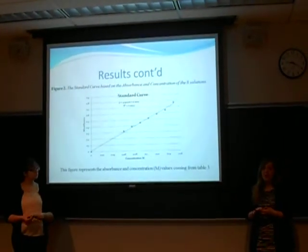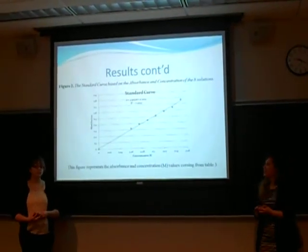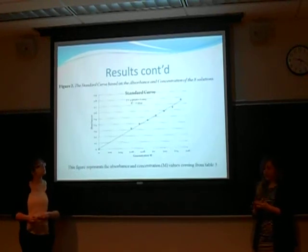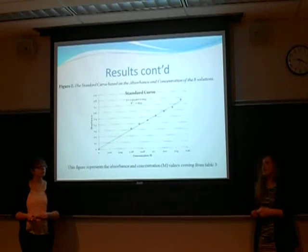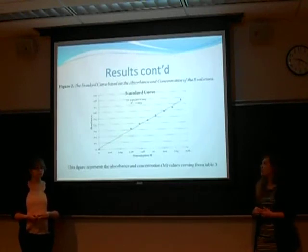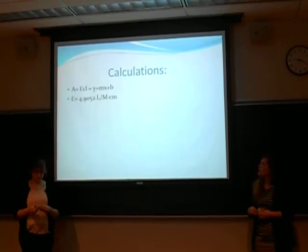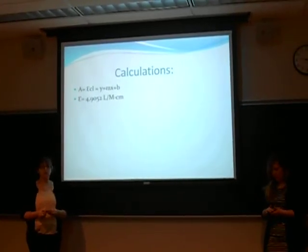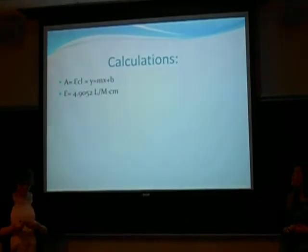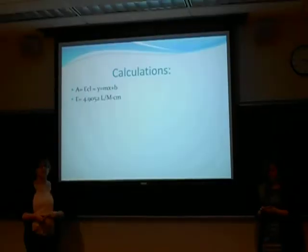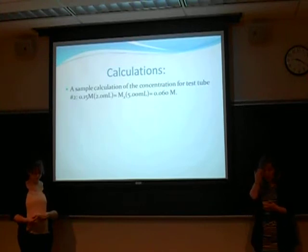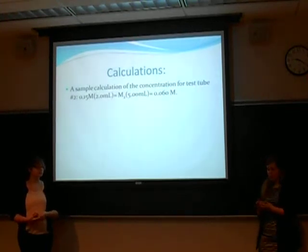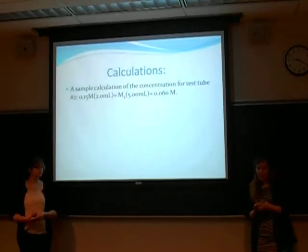Figure two is our graphical representation of the data in table three. This is the standard curve that was established by plotting the concentration values against the absorbance values. The graph demonstrates a positive correlation between the two factors. The equation used for the E-value is comparable to the equation for slope, and 4.9052 was the E-value calculated based on the standard curve.